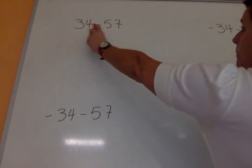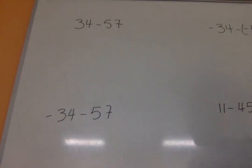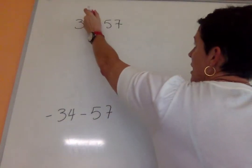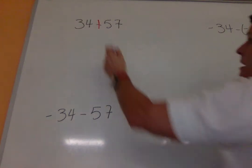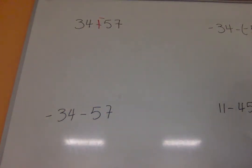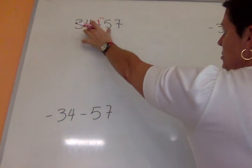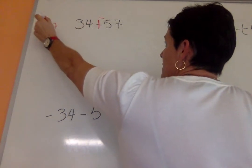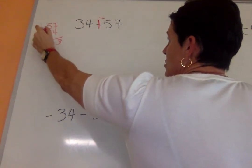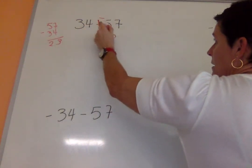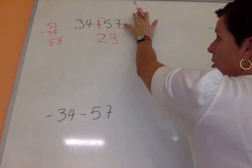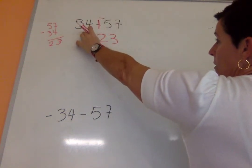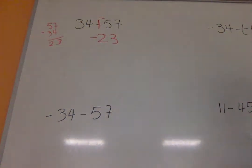The first problem, 34 minus 57. Remember you're adding the opposite when you subtract. So I'm just going to change my subtraction sign to a plus and my 57 to a negative. Now my signs are different, so now I have to subtract. So 57 minus 34 is 23, but the absolute value of 57 is larger than the absolute value of 34, so I have to make this negative 23.